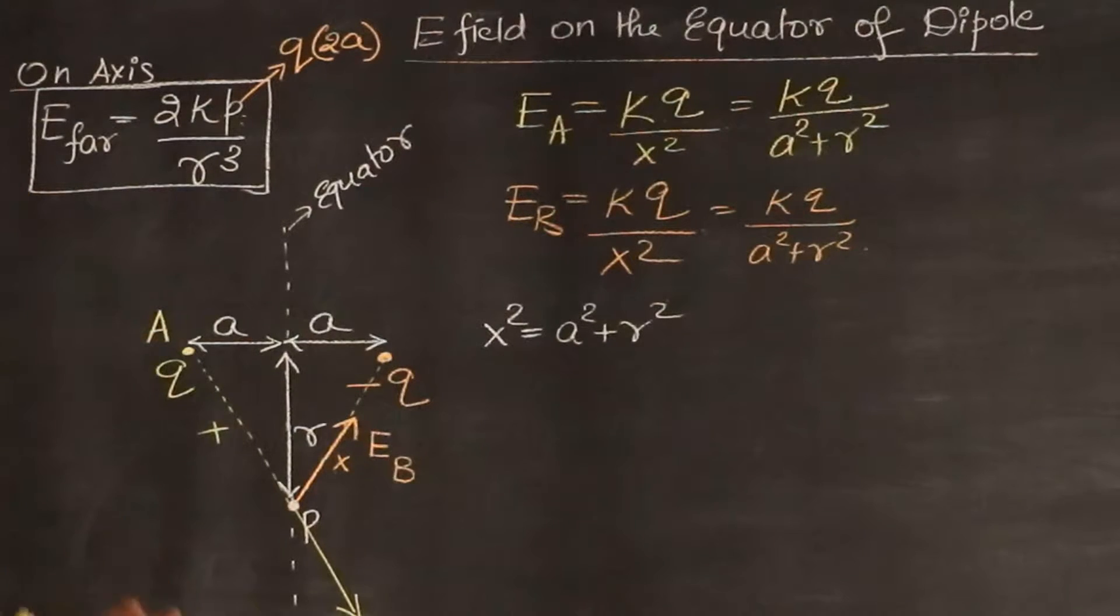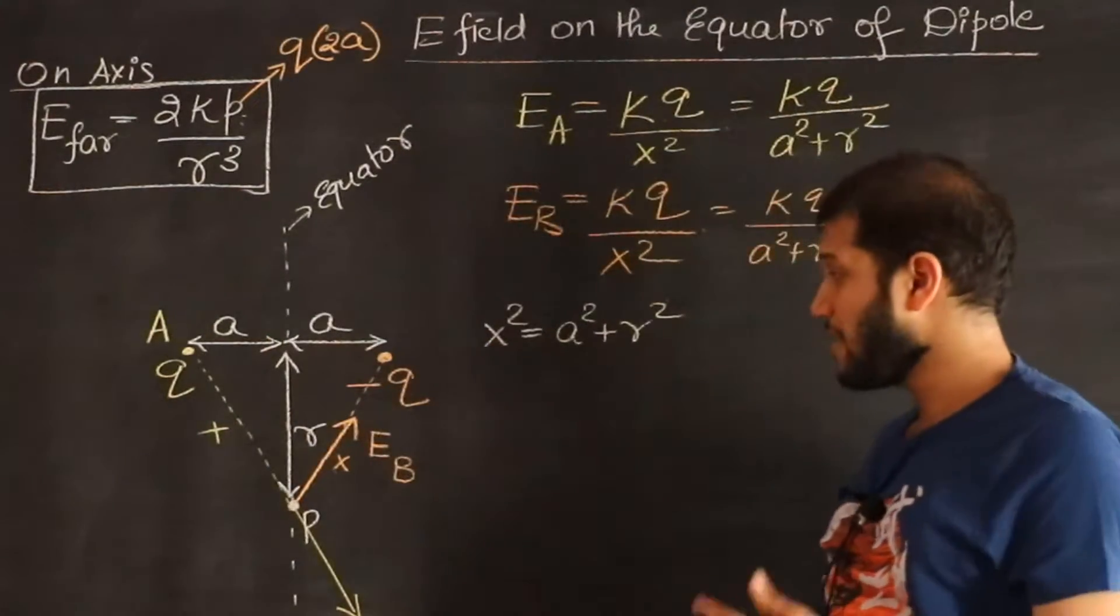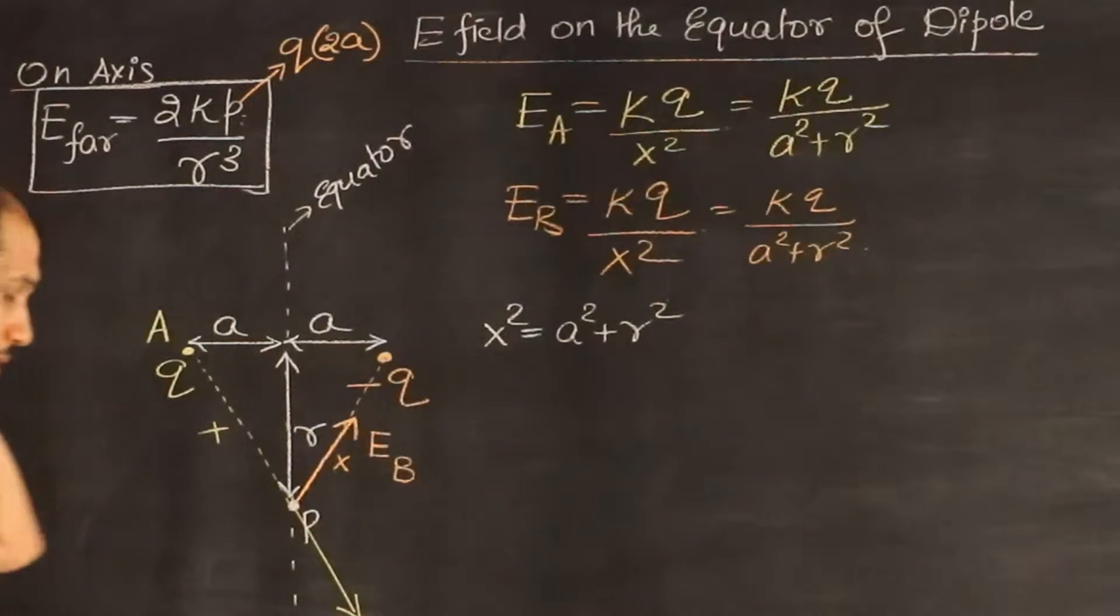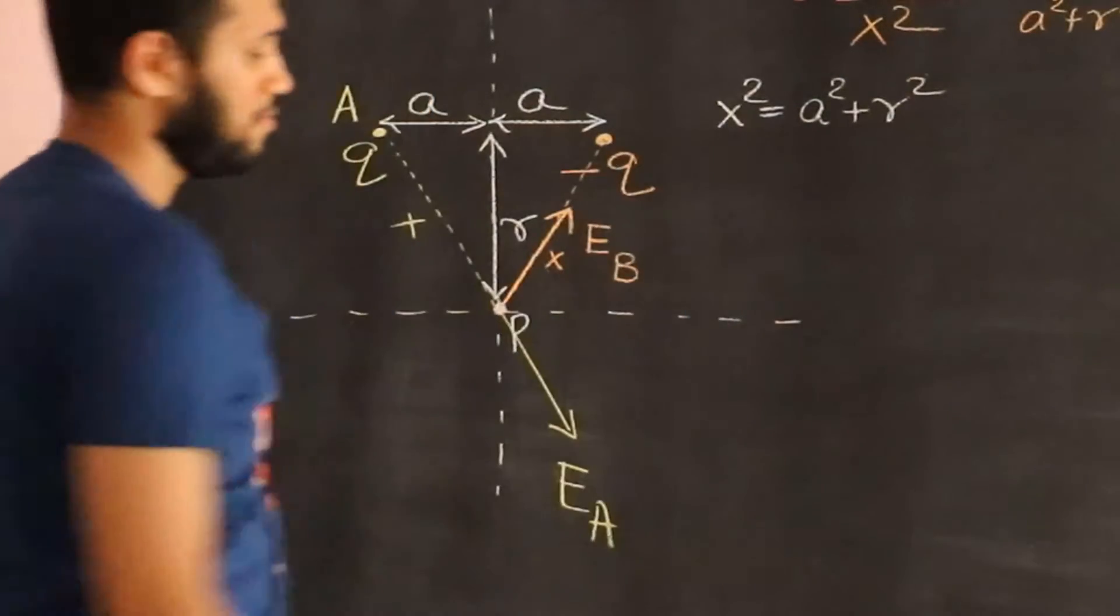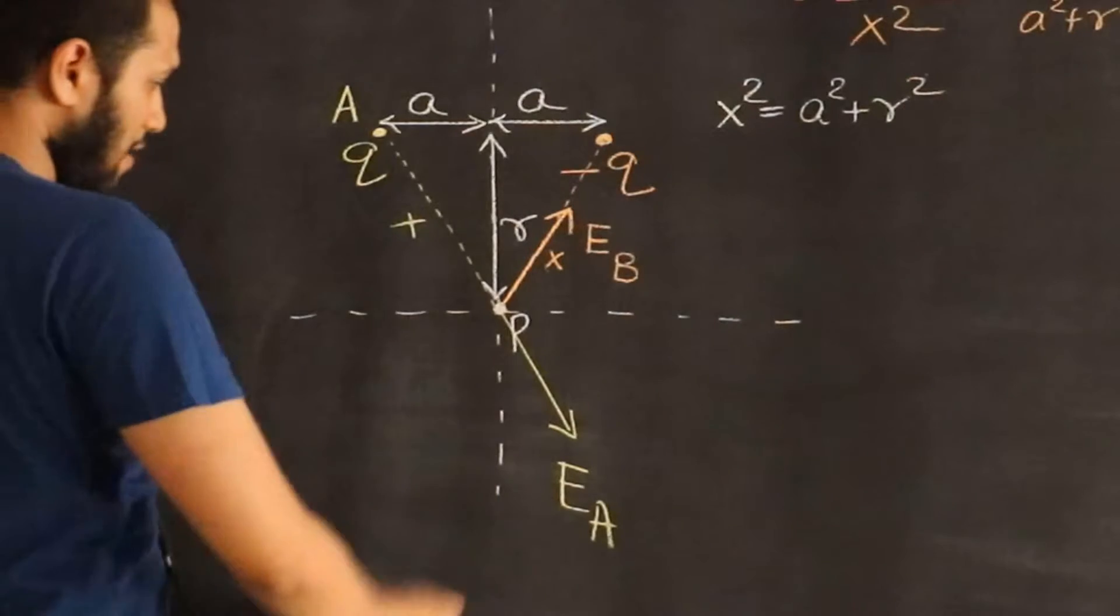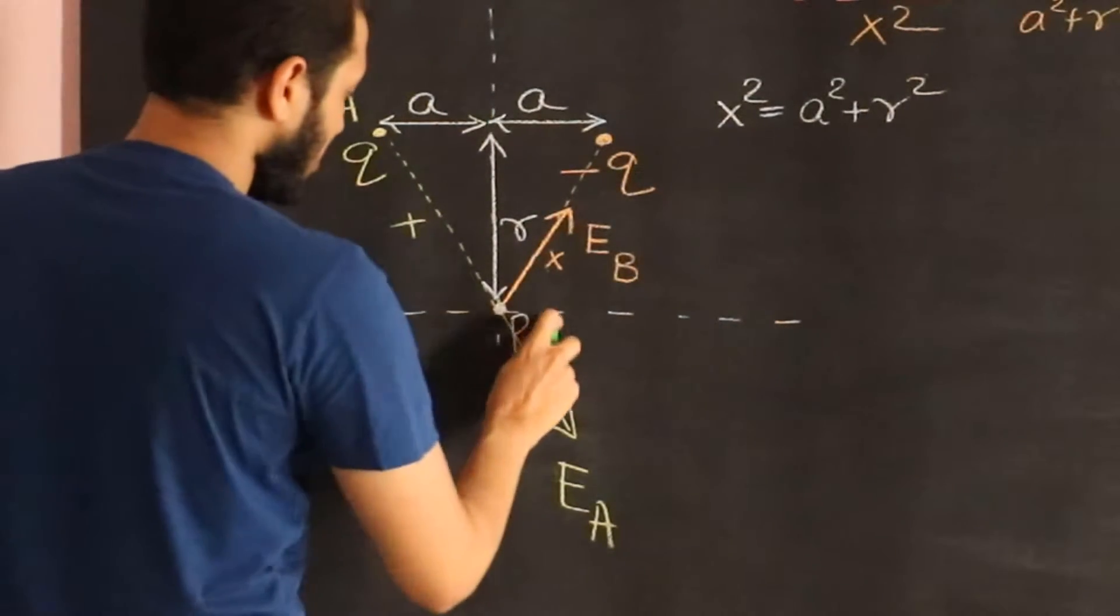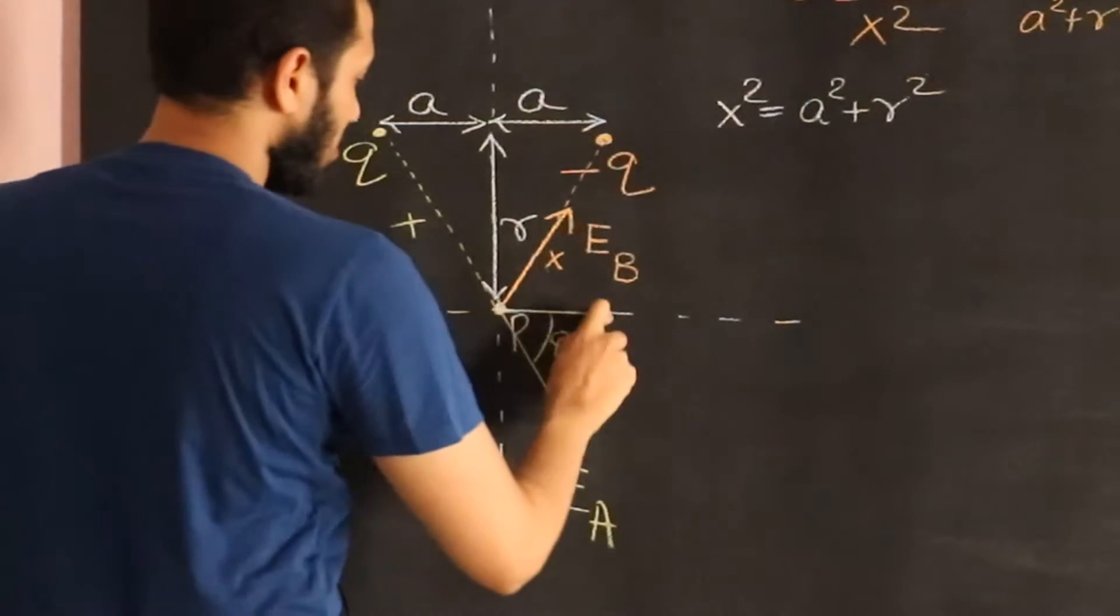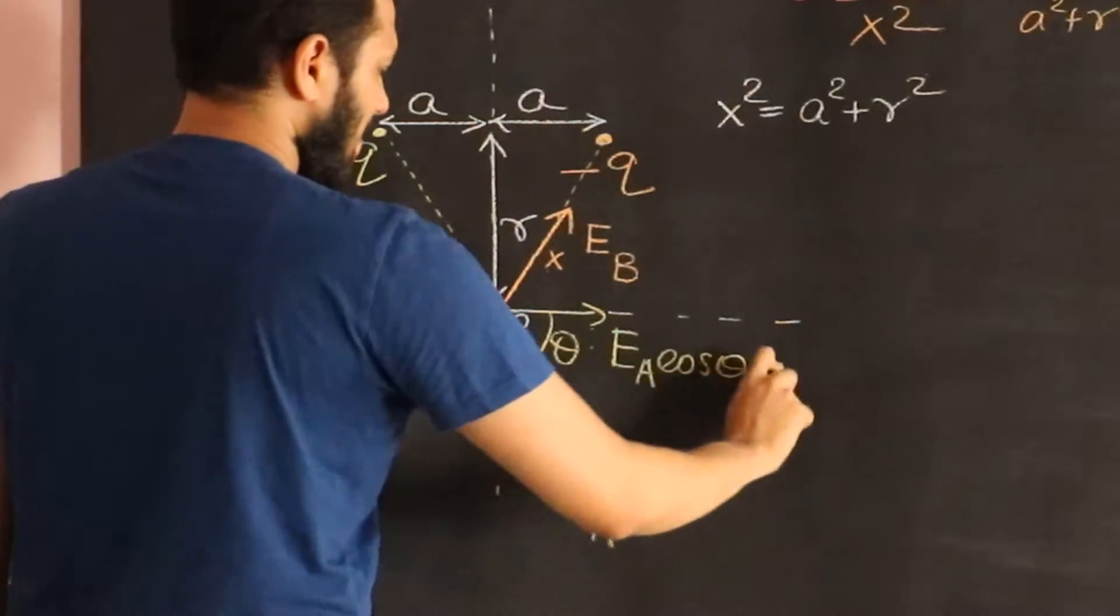So the two electric fields have exactly the same magnitude but they have different directions. Now we can add them either by using the vector addition formula directly or we can decompose them. I prefer to decompose. I'm going to choose my two axes: one this way horizontal, and the other one along the equator. Let's choose one angle as theta. I'm going to call this angle theta.